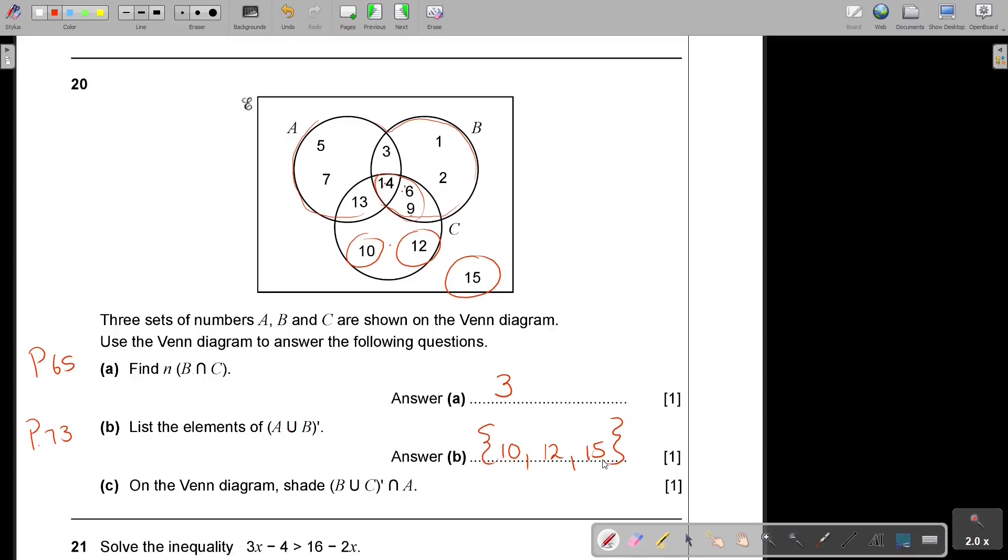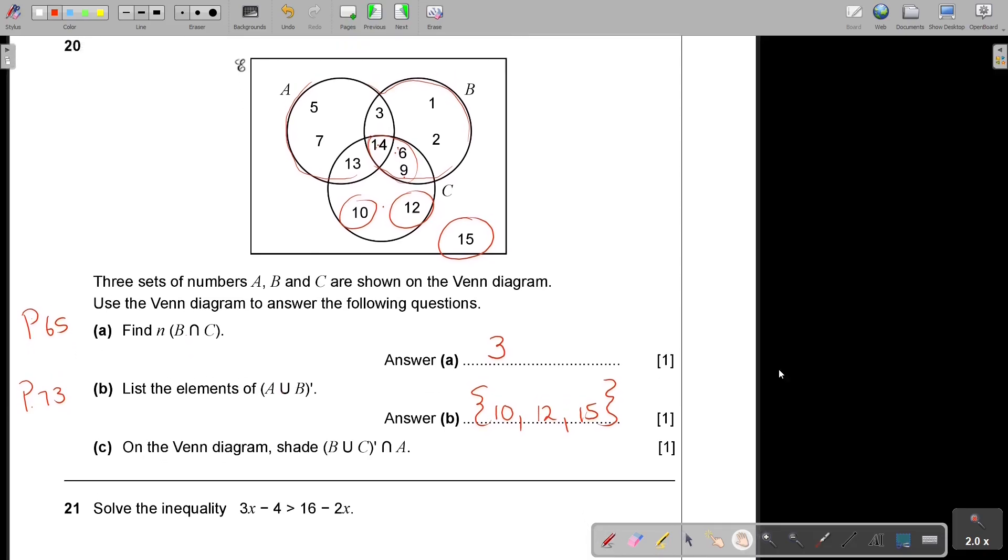And then on the Venn diagram, shade the region. Now, before I shade, I always do it like this. I first go and I write down the elements, and then I look and I just shade where that elements are. So if I say B union C complement, I'm just going to clean a little bit.